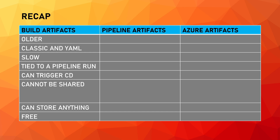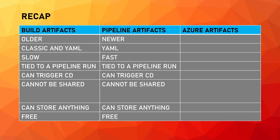Now that we've seen it all, let's recap and see my recommendations. Build Artifacts are the older type and can be used in both Classic and YAML pipelines. They are fairly slow to upload and download, are tied to a specific pipeline run, and can be used to trigger a deployment via release pipelines. Build Artifacts cannot be shared, but you can use them for storing anything you want, and you don't pay for the space you use. Pipeline Artifacts, on the other hand, are newer and faster, but can be used only in YAML pipelines. They are also tied to a specific pipeline run, trigger CD in both multi-stage pipelines and release pipelines, cannot be shared, can store anything, and are free.